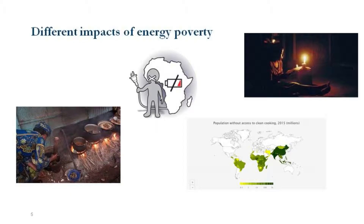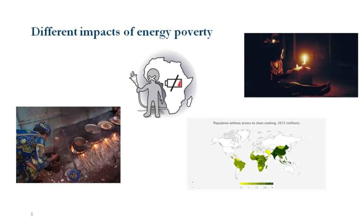We have to think about the different impacts of energy poverty — it's not only lighting. We're talking about heating, cooking, and communication. Energy affects communication, which is very important in current times. It affects knowledge. And looking at the maps again: population without access to clean cooking — the colors are concentrated in the southern part of the planet.